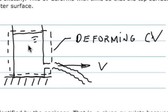This shows a tank filled with water, and the water is draining out this nozzle with speed V. We've defined a deforming control volume that surrounds the tank. By deforming, we mean that the control surface right here will stay coincident with the interface between the water and the atmosphere. There's no inflow of mass, but there is an outflow.